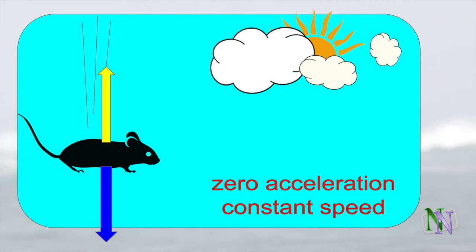A tiny animal such as a mouse, because of its light mass and relatively large surface area, will probably not be hurt when it falls under gravity, since the terminal velocity it reaches is low. This is not true for human beings.